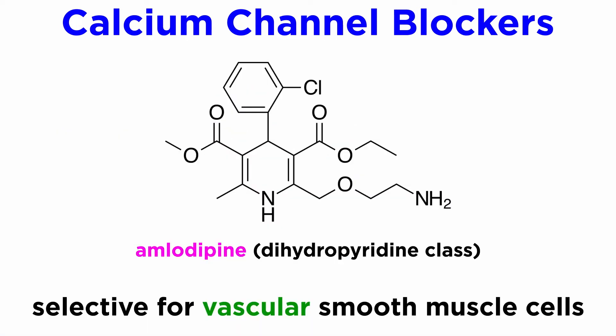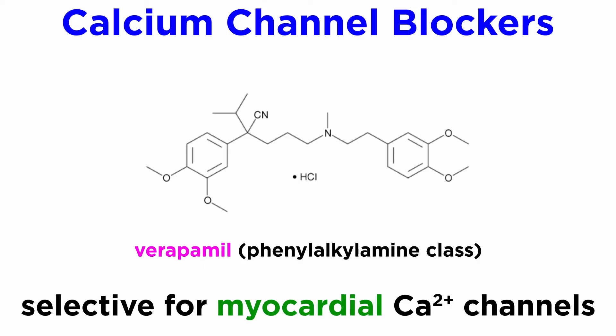Calcium channel blockers in the dihydropyridine class, such as amlodipine, are more selective for vascular smooth muscle cells. However, non-dihydropyridine calcium channel blockers in the phenylalkylamine class, such as verapamil, are more selective for the myocardial calcium channels.